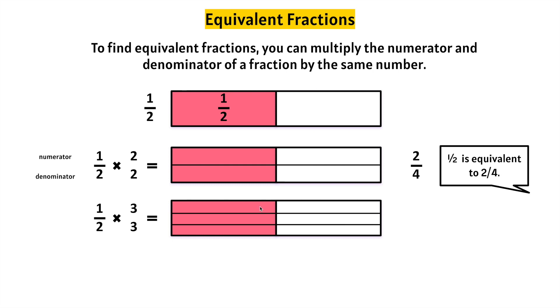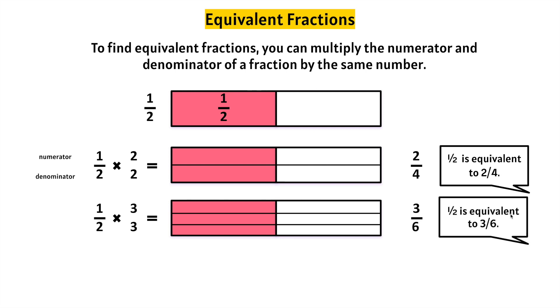Let's count how many are shaded: one, two, three. Three-sixths. So we know that one-half is equivalent to three-sixths — they hold the same value.